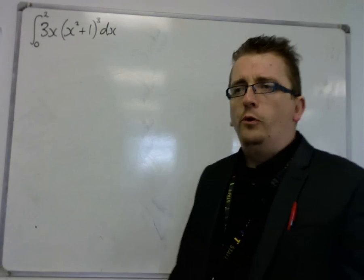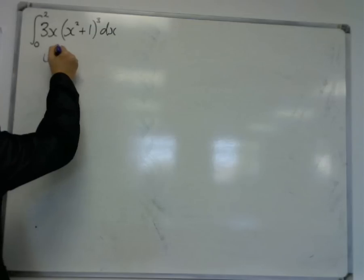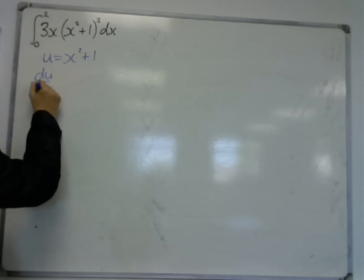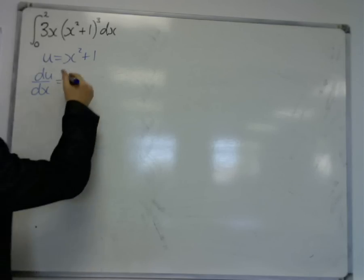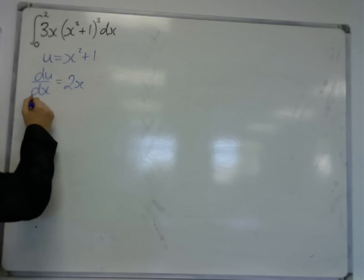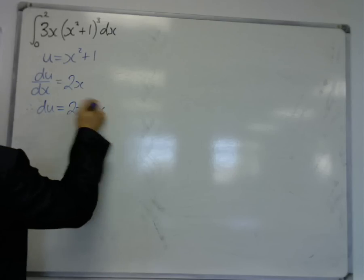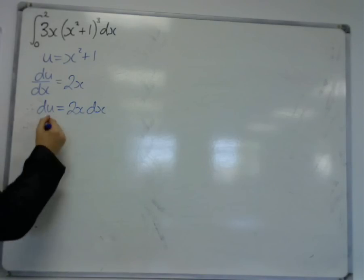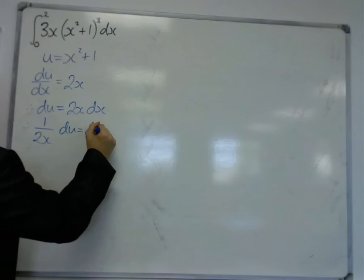However, they're all going to start in exactly the same way. So all the examples that I've looked at have always started with writing down u, and then finding du by dx. So u in this case is x squared plus 1, du by dx will be 2x. So du will be 2x dx, multiplying both sides by dx, and then dividing both sides by the 2x. And 1 over 2x du is equal to dx.